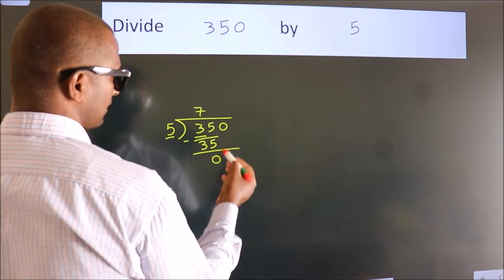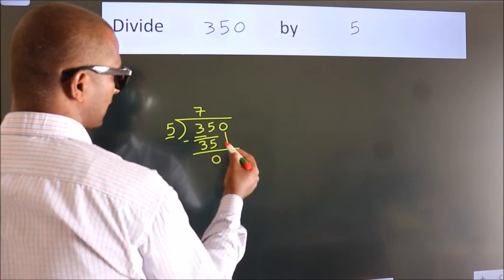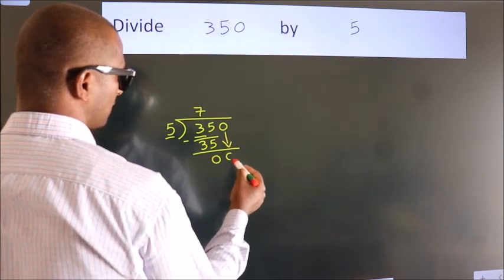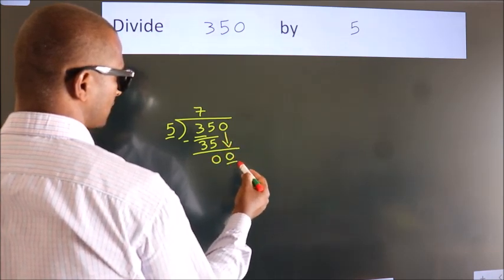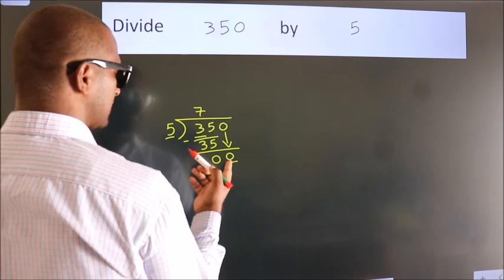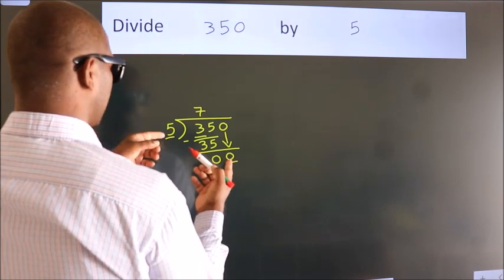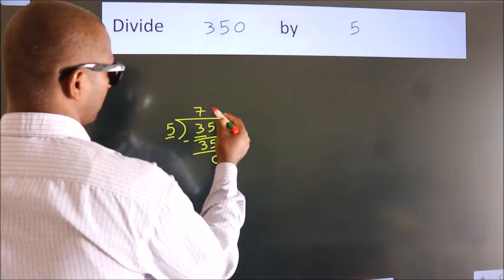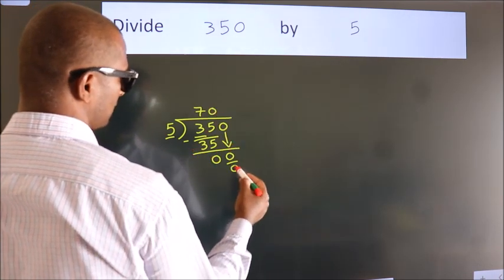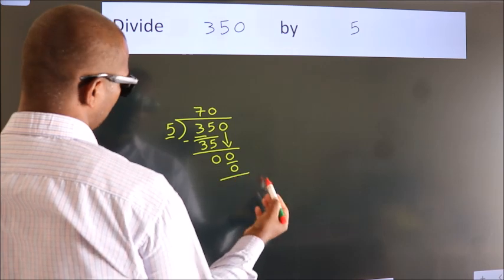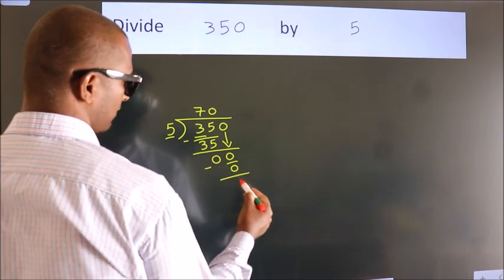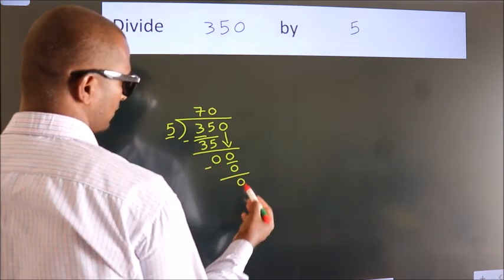After this, bring down the beside number — so 0 comes down. When do we get 0 in the 5 table? 5 times 0 is 0. Now we subtract. We get 0.